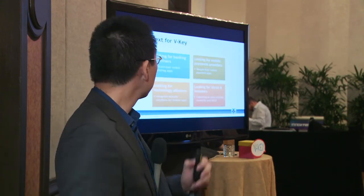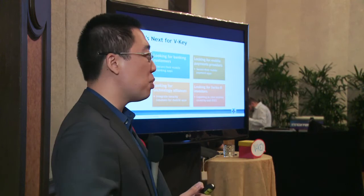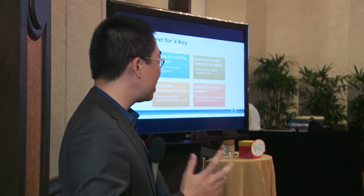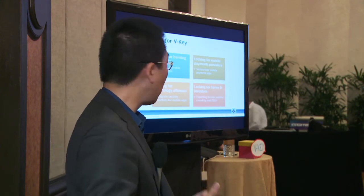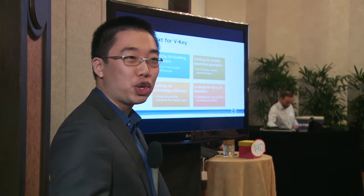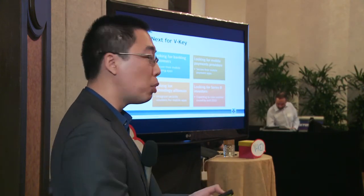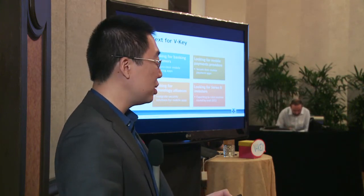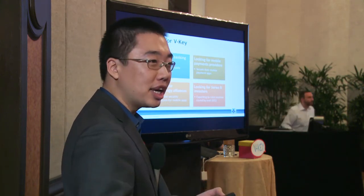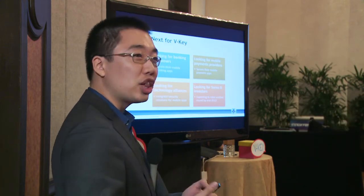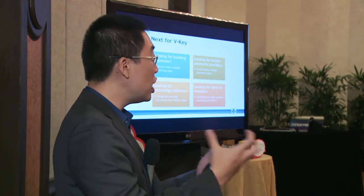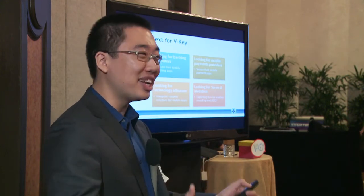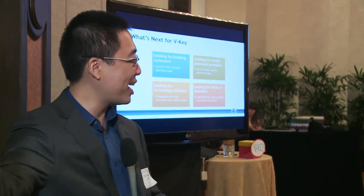What are we looking for? We're looking for banking customers — we have one already and are talking to others in Singapore, Asia Pacific, and the US. We want to help secure mobile banking applications against mobile fraud. We're also looking for mobile payment providers to secure their mobile applications, and technology alliance partners. We've started integrating a number of partners into our solutions — I'll leave those announcements for Black Hat and RSA Asia Pacific.